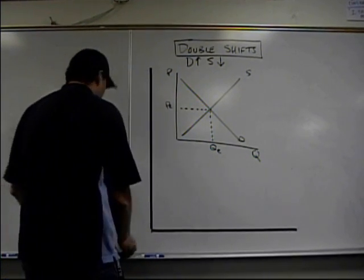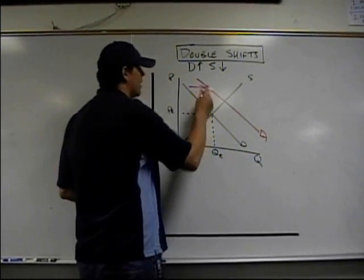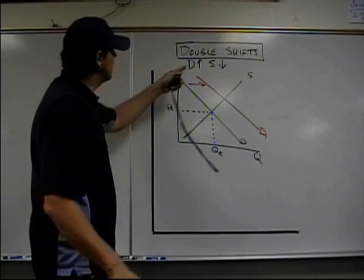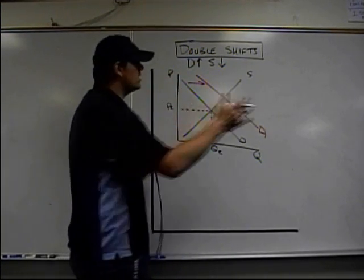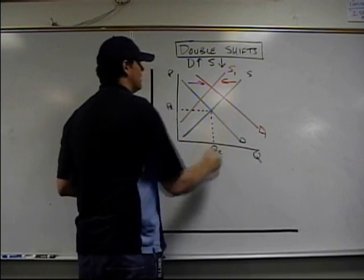A demand increase is a shift to the right, so the demand curve shifts to the right. At the same time, supply decreases. A decrease is a shift to the left. Supply moves right there, shift to the left and done.